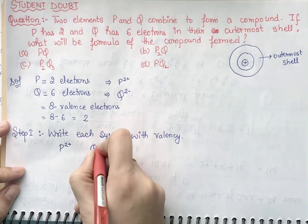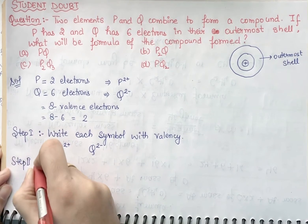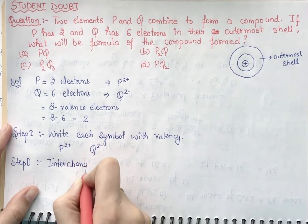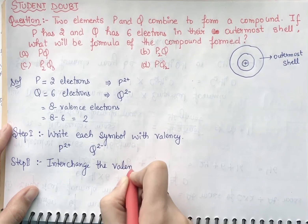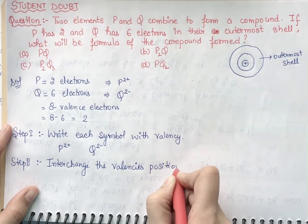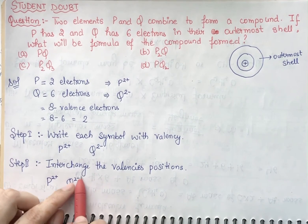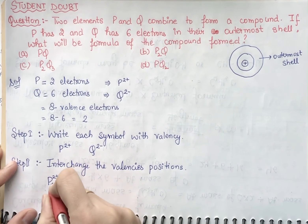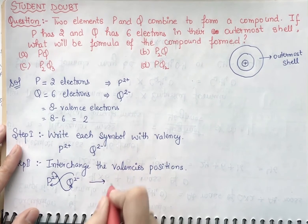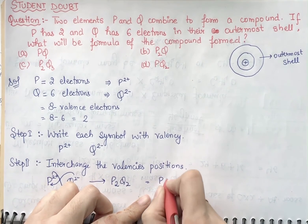Step two is to interchange the valency positions. We write P²⁺ and Q²⁻. We are not supposed to interchange the sign of the valencies — we only change the numbers. P is having two and Q is also having two, so we get P₂Q₂. Taking two as common, it simplifies to PQ.